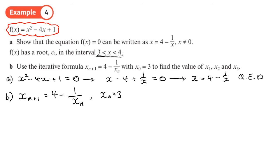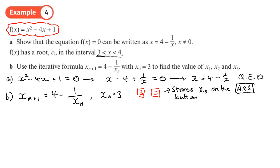There's a quick and easy way to do this on your calculator. Our starting value x0 equals three. Type in three and press equals — that stores x0 on the answer button. Then for step two, type in the iterative formula, but where it says xn, press the answer button. So type in four minus one over answer — using the fraction button — so that you press the answer button where xn appears.